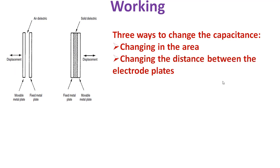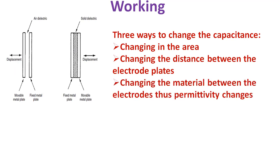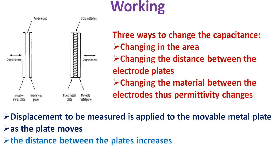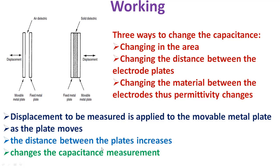One of the two electrodes is made fixed and the other is made movable to measure the displacement. The displacement to be measured is applied to the movable plate. As the plate moves, the distance between the plates increases, and this changes the capacitance. Thus, the change in capacitance is a function of the displacement of the electrodes, and that is how we measure the displacement using capacitance.